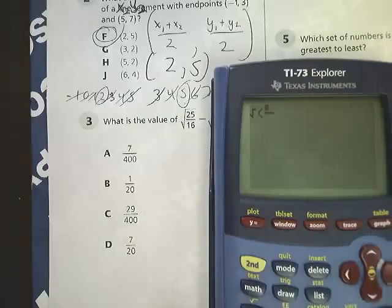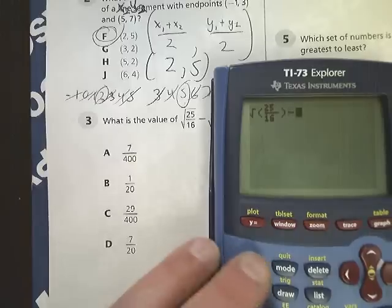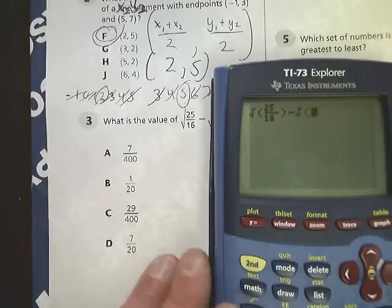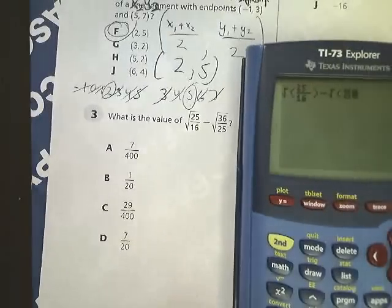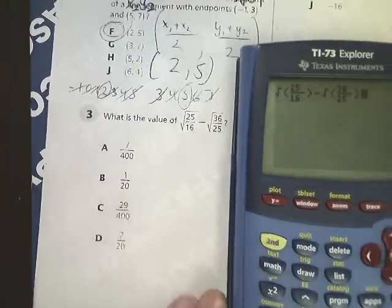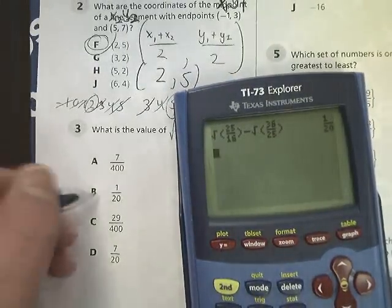Square root 25 over 16. If you have a TI-84, you go into alpha and then hit, I think, F1 and it pops up a fraction button that you can use. Hit enter, and I get 1 over 20, so it's B.